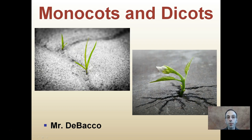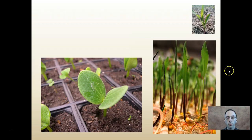Here we're going to go over the difference between monocots and dicots. Pictured here, I have a representation of each of these two categories. Monocots are here — they look like grasses or small corn plants. And dicots here is represented by the bean plant.